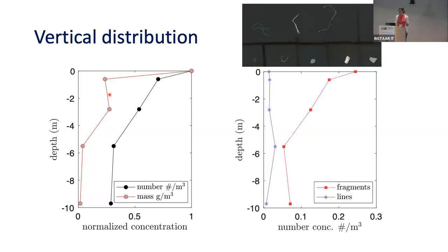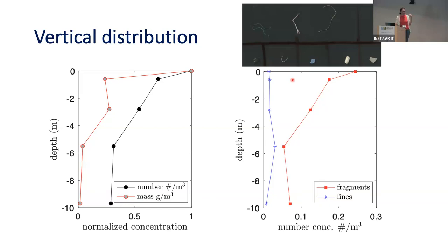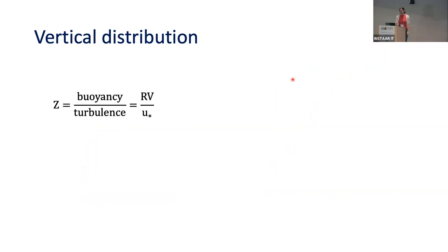We can also look at the type of particles, because these particles are very varied. Some are long filamentous fibers, and some are flatter fragments. We can divide the concentration profile by type: fibers are more well-mixed with depth, whereas fragments decay more strongly with depth. We wanted to do something a little more than this, so we can think about what we expect to be important — buoyancy and turbulence — and construct a non-dimensional number. This is really just very similar to a Rouse number, but now for positively buoyant particles.